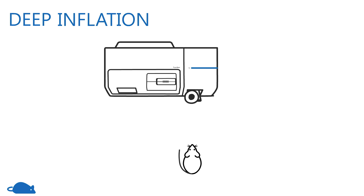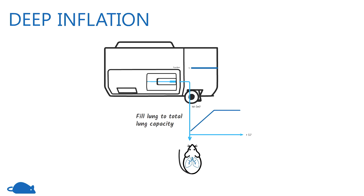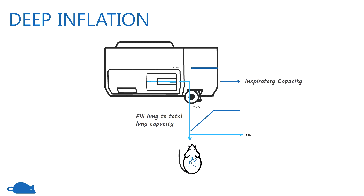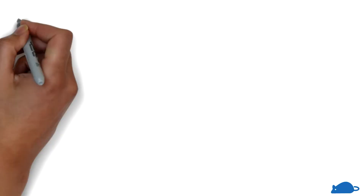In the deep inflation measurement, the lungs are recruited to total lung capacity, followed by a brief hold for lung pressure equilibration. The inspiratory capacity is calculated as the total volume change due to the measurement.